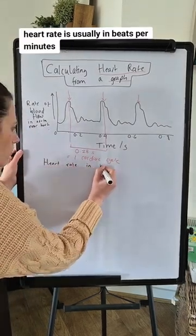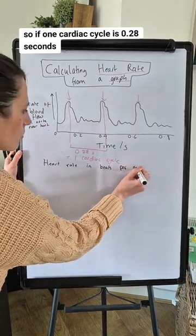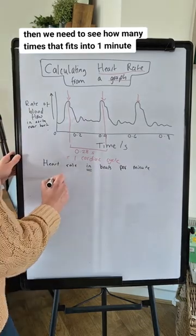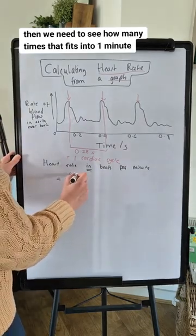Heart rate is usually in beats per minute, so if one cardiac cycle is 0.28 seconds, then we need to see how many times that fits into one minute.